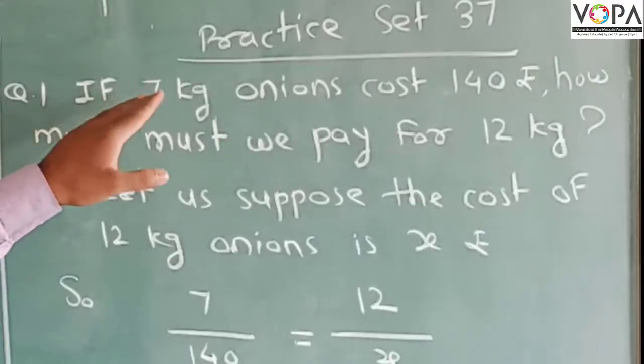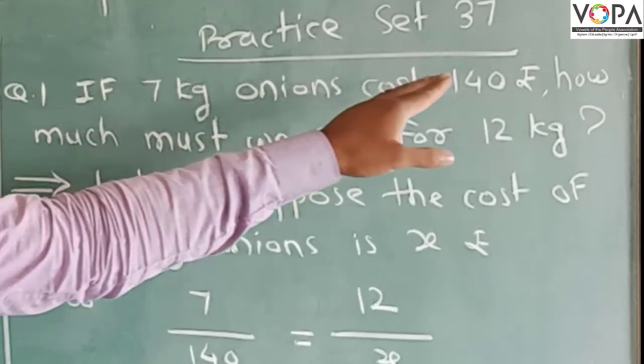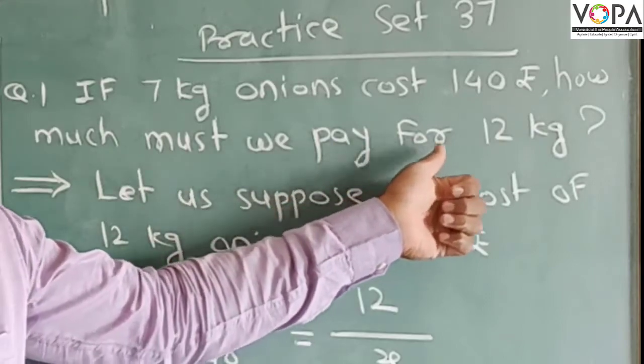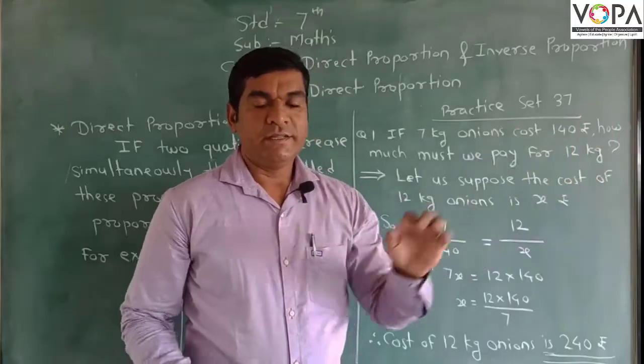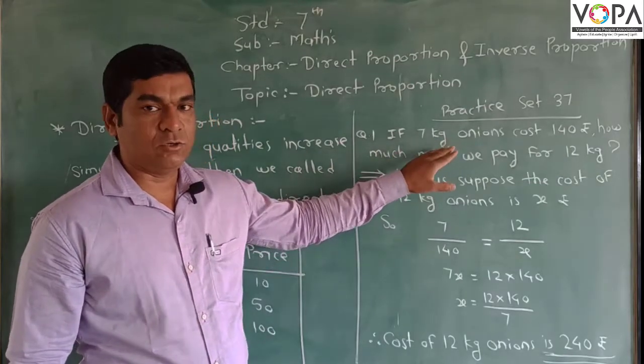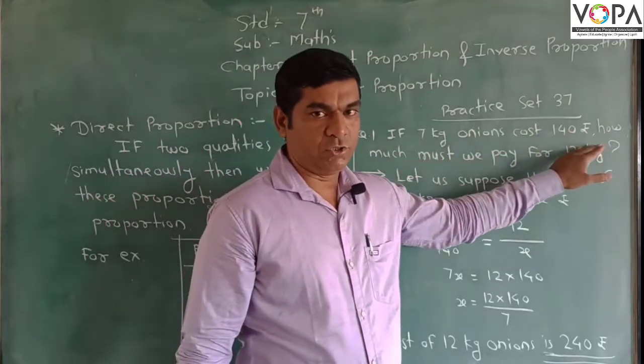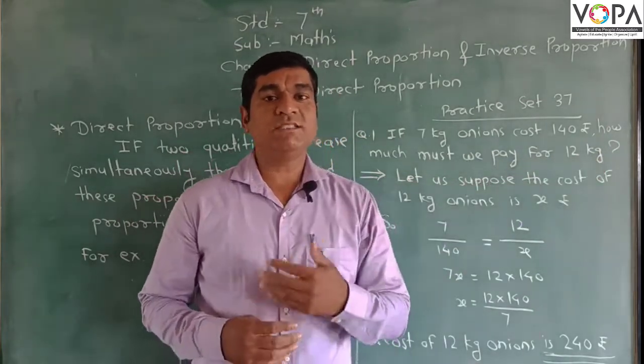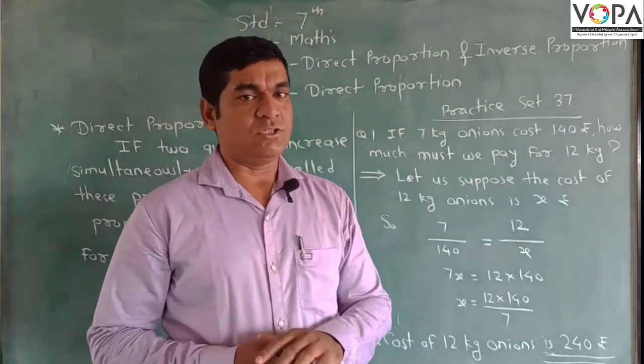Practice Problem 27: If 7 kg onions cost 140 rupees, how much must we pay for 12 kg? In this example, they have given that if we buy 7 kg onions, then we pay 140 rupees. But when you want to buy 12 kg onions, how much amount do we pay? That is the question.